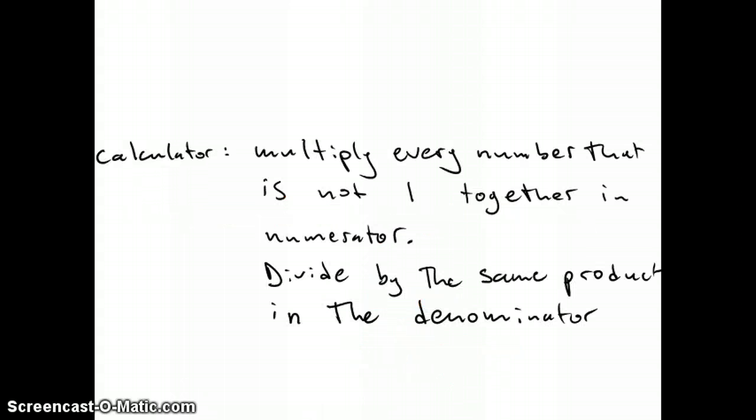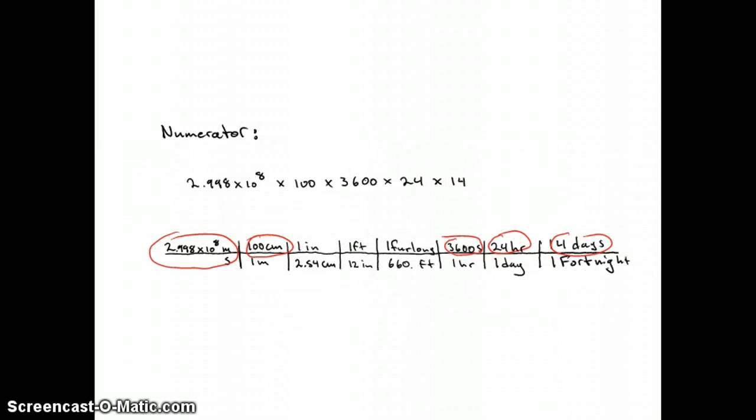So to accomplish this on the calculator, we take every number in the numerator that is not 1 and we multiply it together. Then we divide that by the product of everything in the denominator that is not 1. So everything in the numerator is our given 2.998 times 10 to the 8th, then 100, then 3600, then 24, then 14.